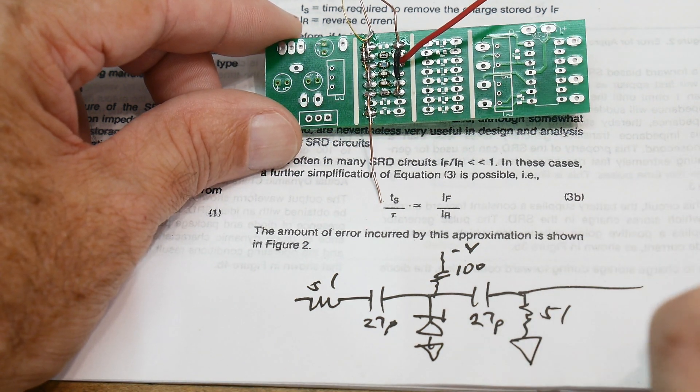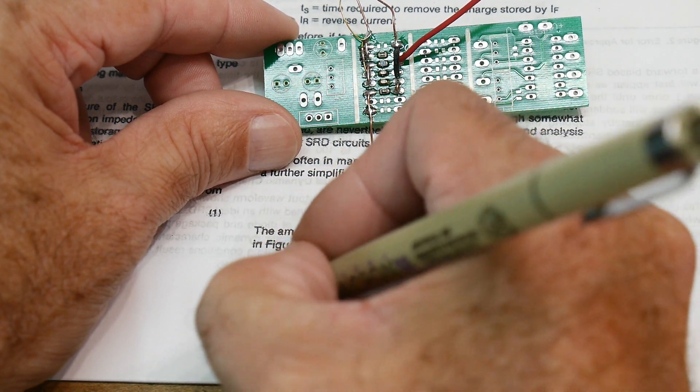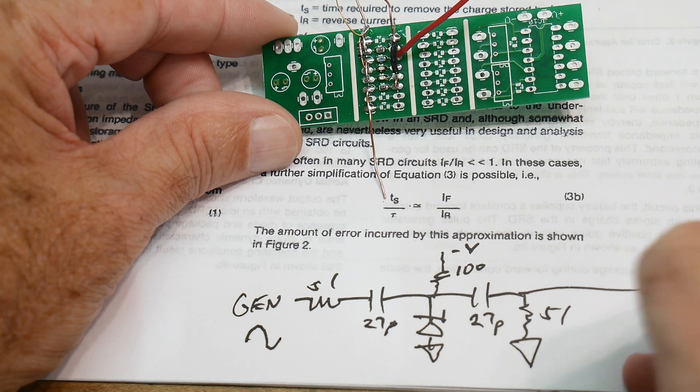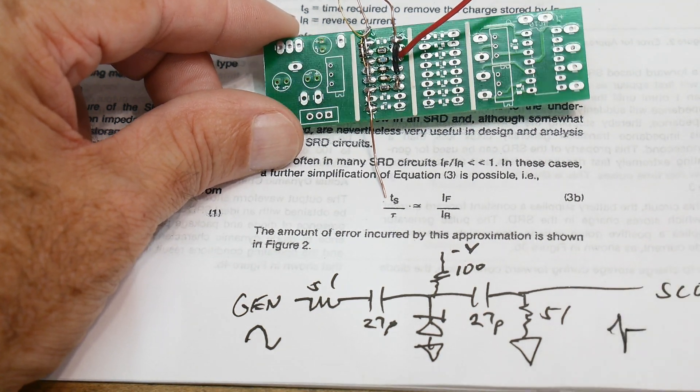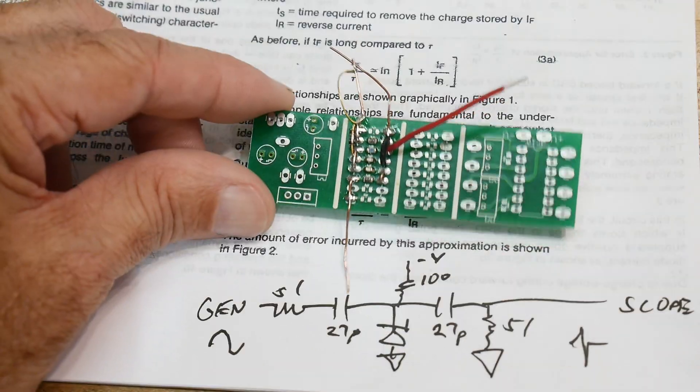So, yeah, there it is, so this will be a generator. I'll put in a sine wave, and this will go to the scope. And hopefully we'll get little spikes of some kind out of it. So that's the plan.